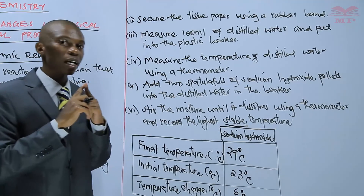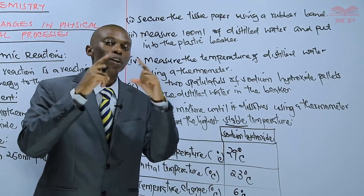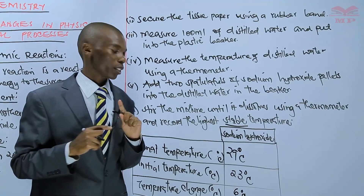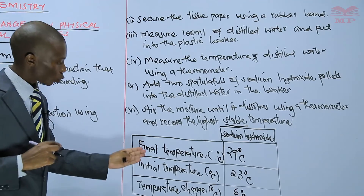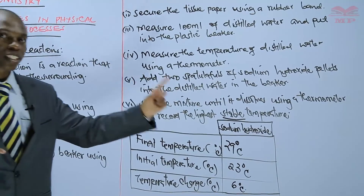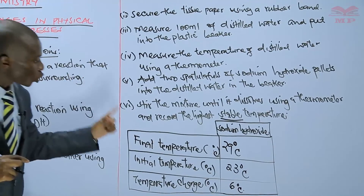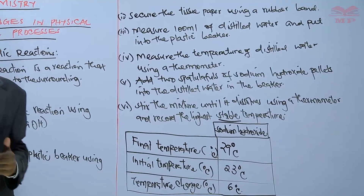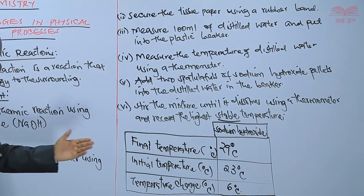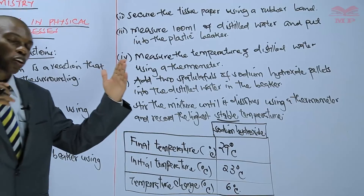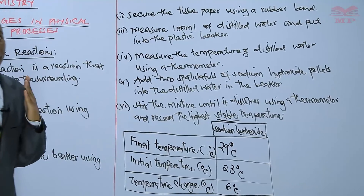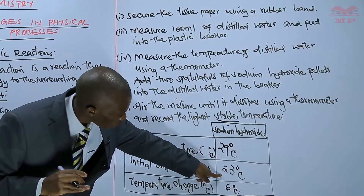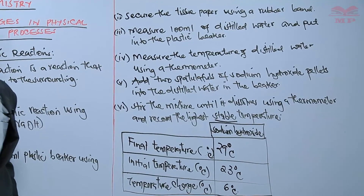The highest stable temperature is the point at which the temperature stops rising — that is what you record as your final temperature. In the table, record the final temperature, which is the highest stable temperature of the mixture, and the initial temperature, which is the temperature of distilled water before adding sodium hydroxide pellets. The temperature change is the difference between the final and initial temperature — in our case, 29 minus 23 gives 6 degrees Celsius.